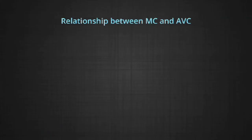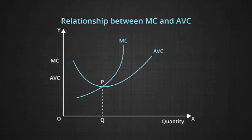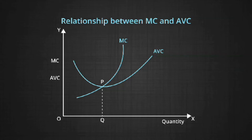We will now discuss the relationship between MC and AVC curves. Both MC and AVC are derived from the total variable cost. During the short run, fixed costs do not change — it is only variable cost which changes with the level of output. Thus, changes in marginal costs are in fact due to changes in variable costs. When average variable cost is falling, marginal cost is less than average variable cost. The marginal cost curve cuts the AVC at its minimum point. As AVC begins to increase, the marginal cost curve lies above the average variable cost curve.